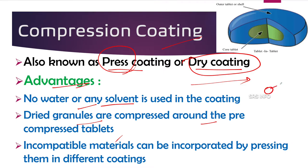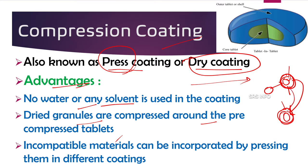In compression coating, dried granules are compressed around a pre-compressed core tablet. First, a core tablet is made, then it is passed to another die where granules of the coating material are already supplied, and compression gives pressure on the die to apply the first coating. It is then passed to a third die for the next coating of incompatible material. Incompatible drugs can be incorporated by pressing them in different coating layers.